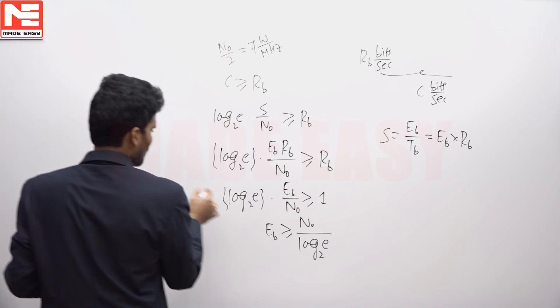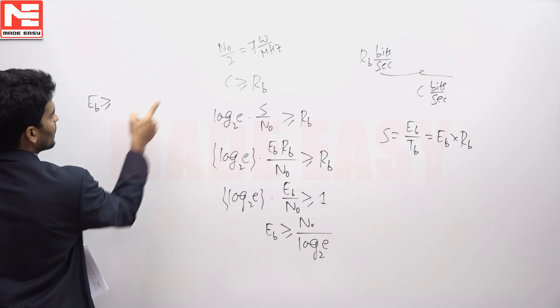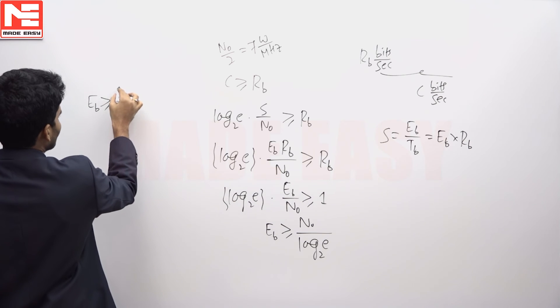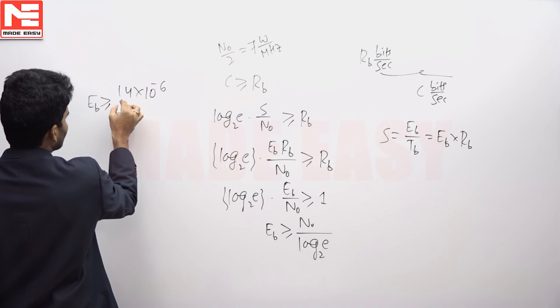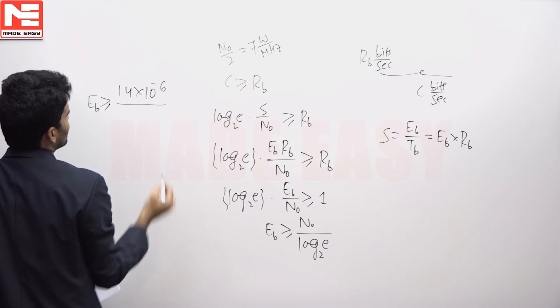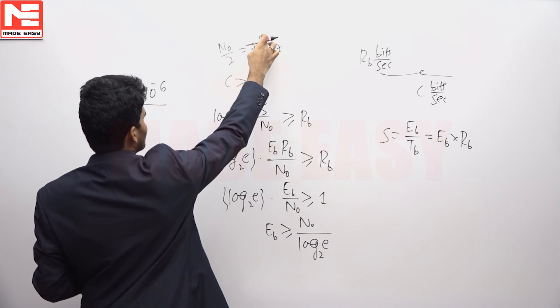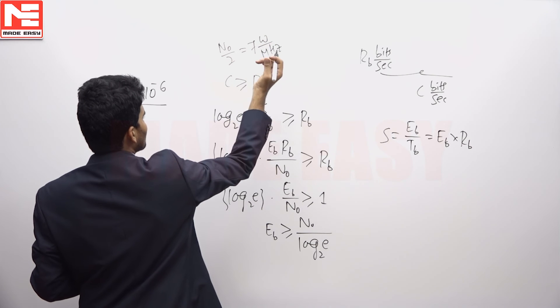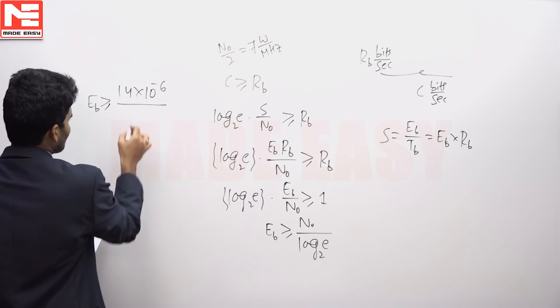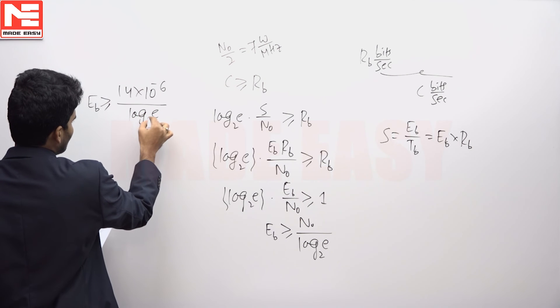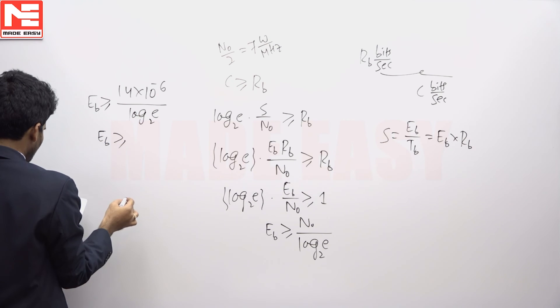Now N0 by 2 is 7 watts per megahertz, so N0 equals 14 into 10 power minus 6 watts per hertz, which is 14 watts per megahertz. So EB is greater than or equal to 14 times 10 power minus 6 watts per megahertz by log E base 2.